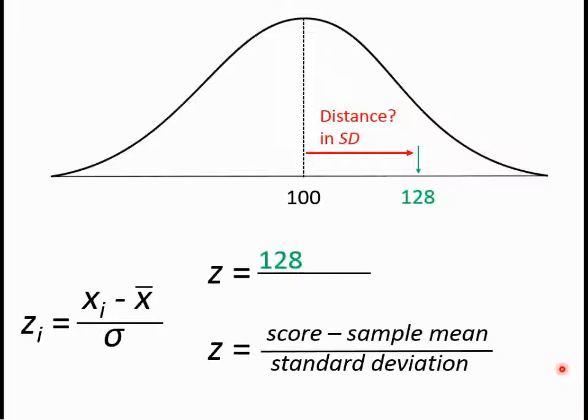We have our IQ score of 128 minus our mean of 100, which gives us 28, divided by a standard deviation of 14. Remember, standard deviation is a measure of the dispersion of the data with respect to the mean. We're assuming our IQ data tends to differ by 14 points with respect to the mean, and so 28 divided by 14 equals 2.0.